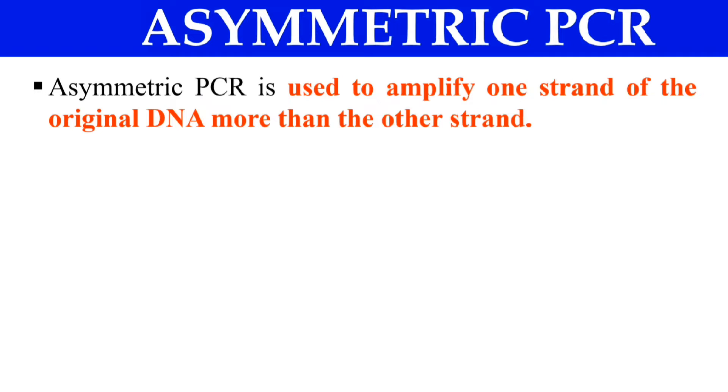But asymmetry means when two or more things are not in the same pattern or same quantity or same alignment. In any way you can imagine, asymmetry means when two things are not in accordance with each other. They differ from each other, simple.